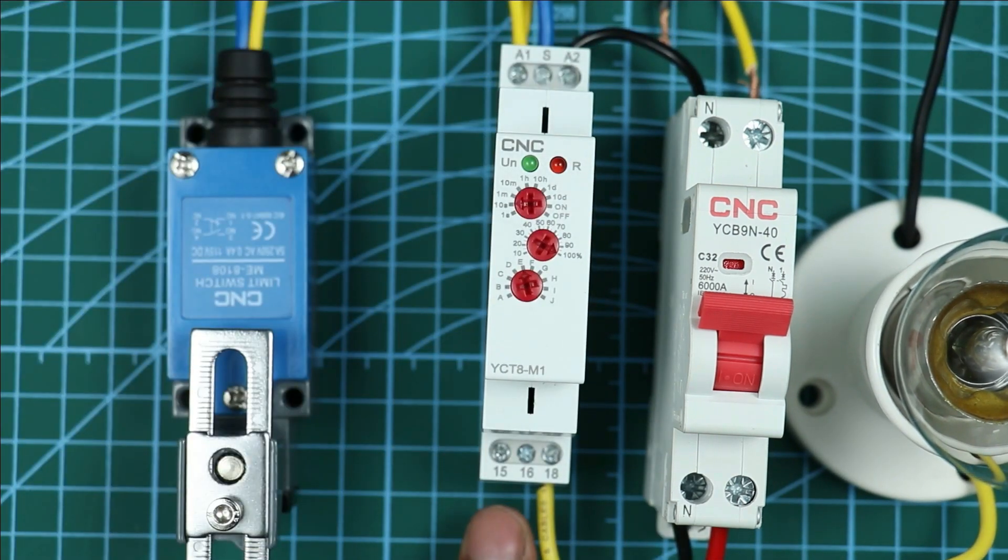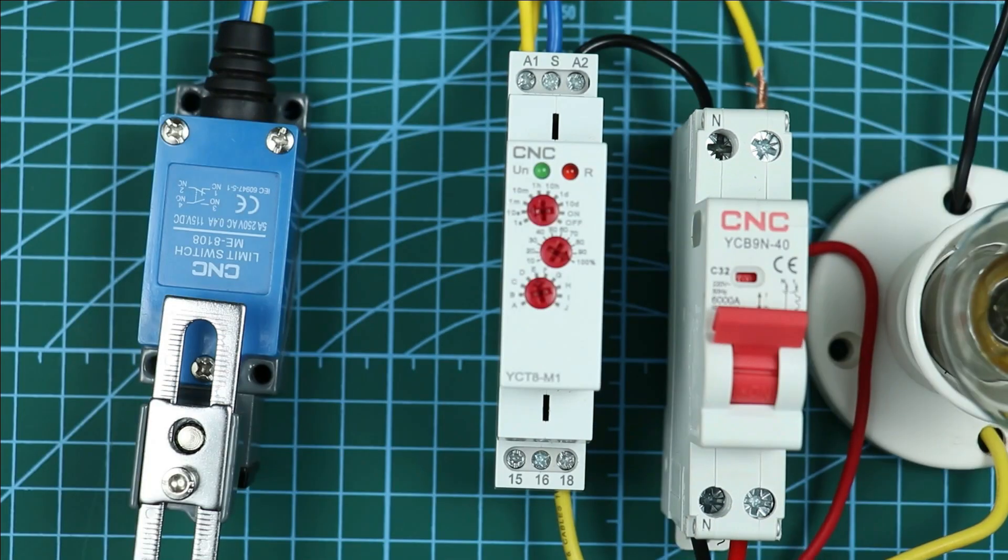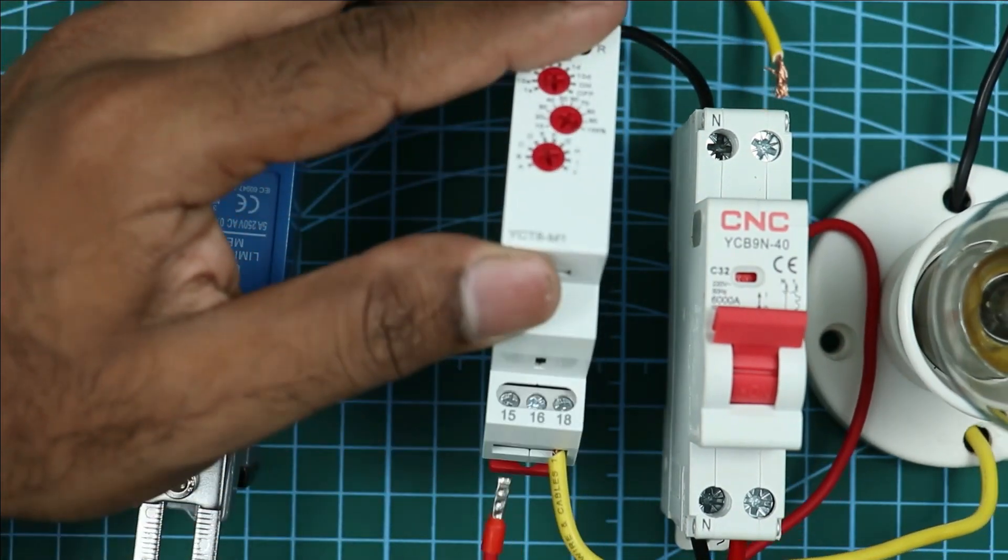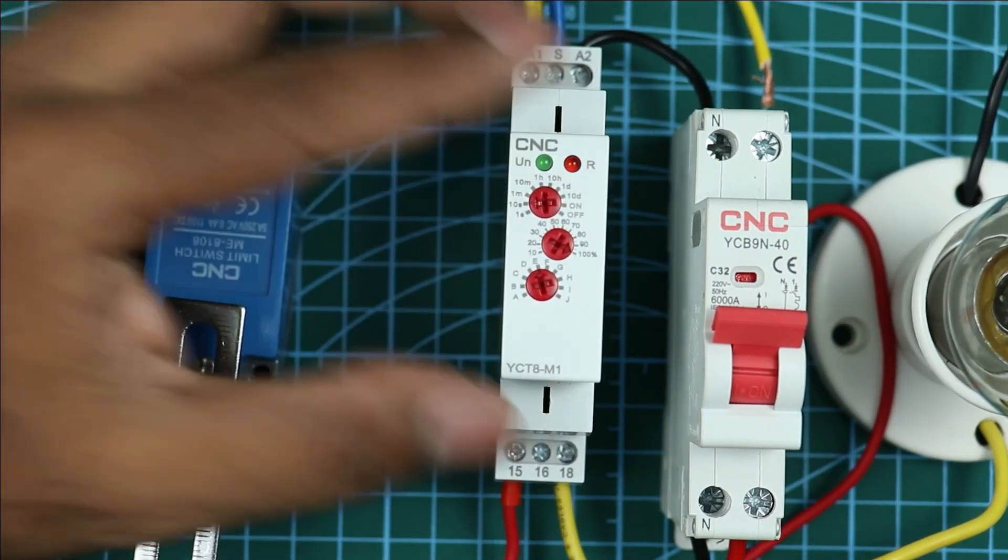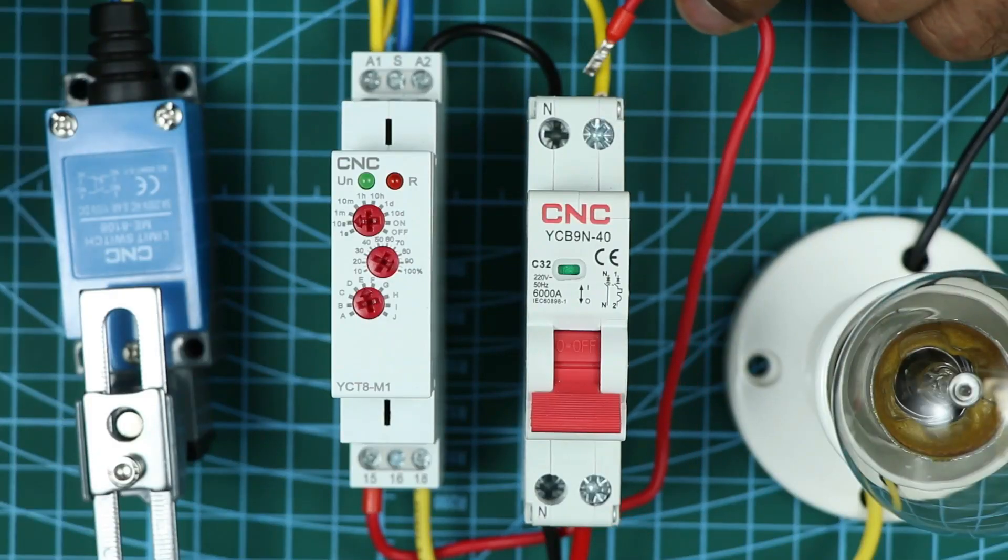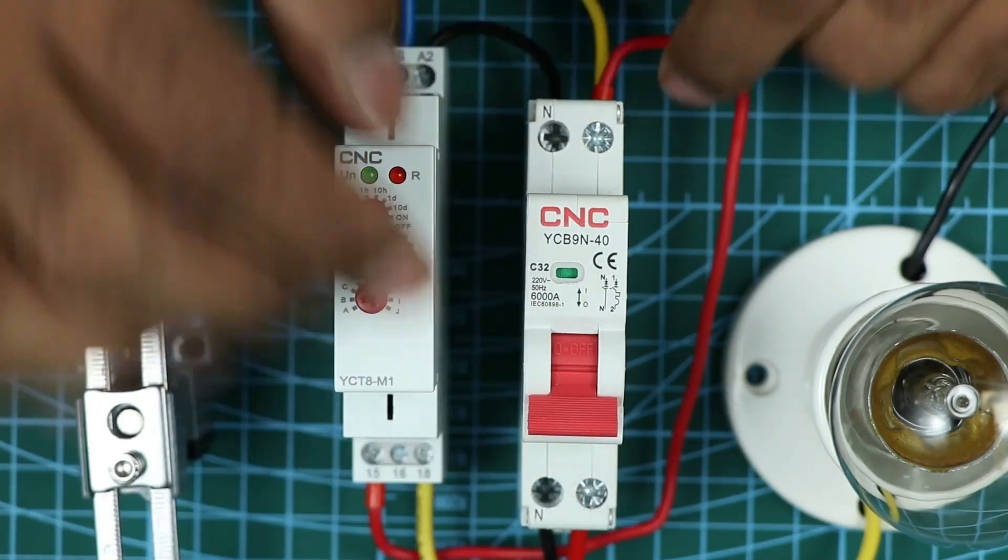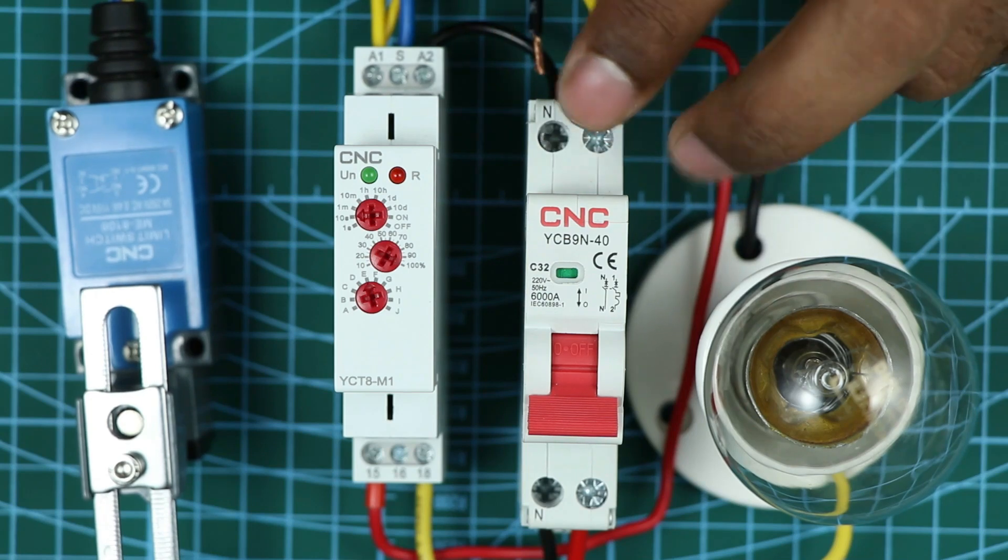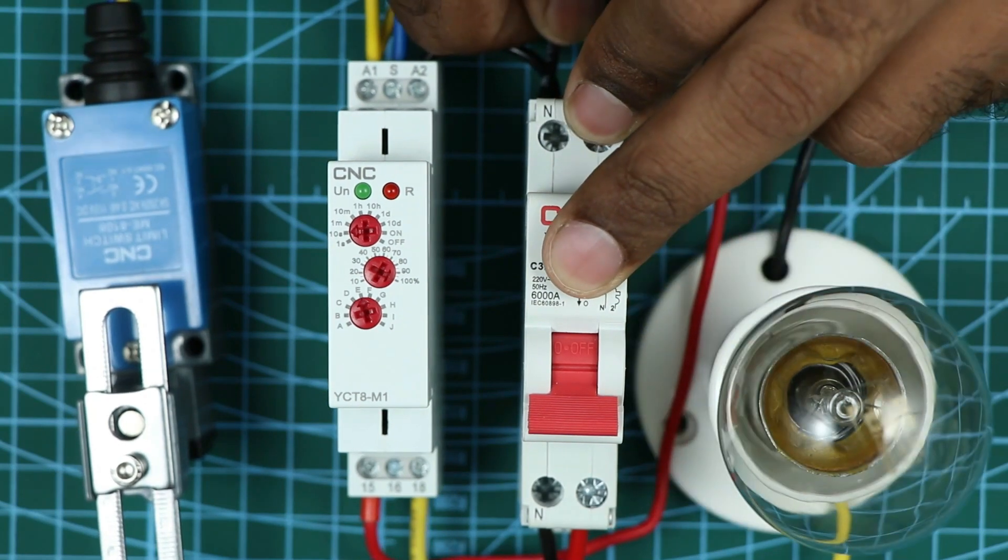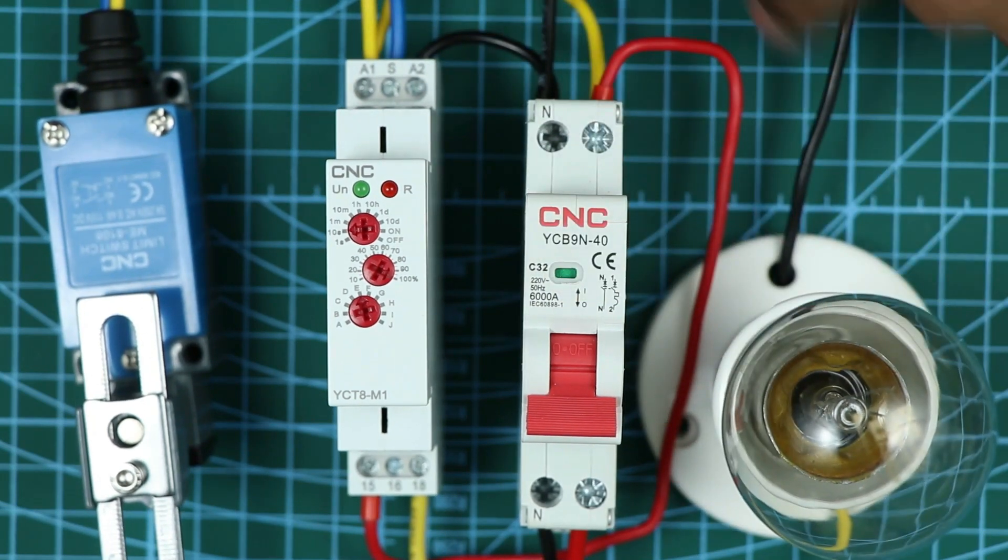At the common terminal of this timer, that is 15 number terminal, we have to provide phase supply. For this, I am taking one end of the wire and connecting to this 15 number terminal. Other end of the wire is to be connected with phase supply terminal of MCB. Take this neutral wire of the lamp and connect with neutral supply of the MCB so that through MCB, lamp receives neutral power supply.